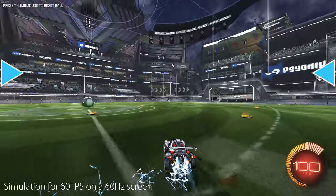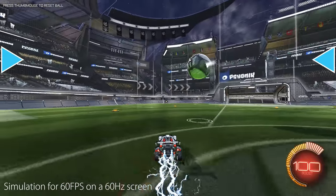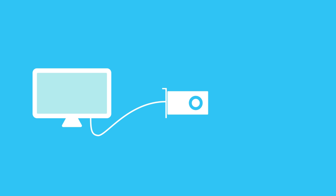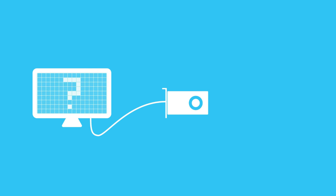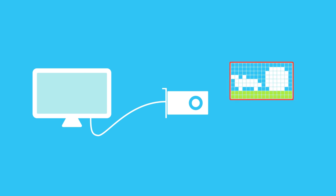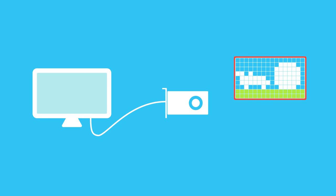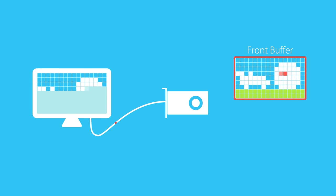So why does this happen when you game? For that I need to explain some of the basics of how the monitor and the graphics card work together. In order for the monitor to know what it's supposed to display, the graphics card keeps a constant copy of the current image in a part of its memory — the so-called front buffer. All the monitor does is read from the front buffer, pixel by pixel, line by line, frame by frame.